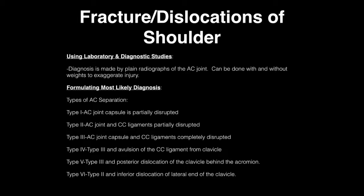Type 1 is when the joint capsule is partially disrupted. Type 2 is when the CC ligaments are partially disrupted. Type 3 is when the joint capsule and CC ligaments are completely disrupted. Type 4 is an avulsion of the CC ligament and clavicle. Type 5 is posterior dislocation of the clavicle behind the acromion. Type 6 is an inferior dislocation of the lateral end of the clavicle.